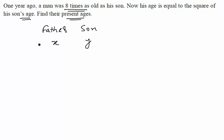Let us go back to the question and try to make a few equations. The question says one year ago. So if x and y are the present ages of father and son, one year ago their ages will be x-1 and y-1.